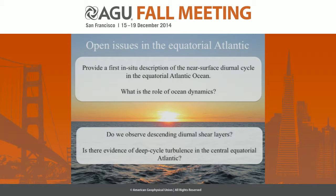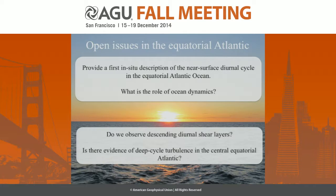Today, the work I'm going to discuss are really some first results looking at the near-surface diurnal cycle in the equatorial Atlantic, with a real focus on the role of ocean dynamics. While we don't have direct dissipation measurements as part of this work, we will specifically focus on several questions designed to link to some of the exciting work coming out of the Pacific. Namely, do we observe the descending diurnal shear layers shown in the Pacific to provide initiation for deep cycle turbulence? And is there any indirect evidence at this location of deep cycle turbulence?